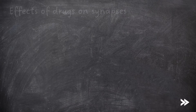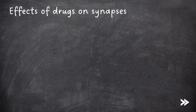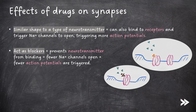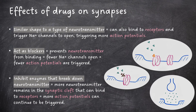Finally, we should also be able to interpret information provided to predict and explain the effects of specific drugs on synapses. Some drugs may have a similar shape to a type of neurotransmitter, and so may also bind to receptors and trigger sodium ion channels to open, triggering action potentials. Other drugs may also bind to receptors but act as blockers, preventing neurotransmitters from binding, so fewer sodium ion channels open and fewer action potentials are triggered. Some drugs may inhibit enzymes that break down neurotransmitter, so more neurotransmitter remains in the synaptic cleft and more action potentials can continue to be triggered.